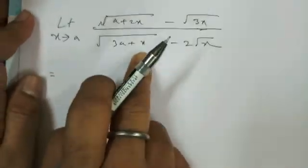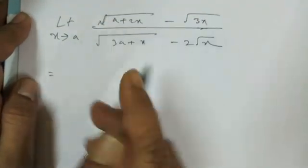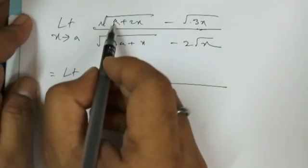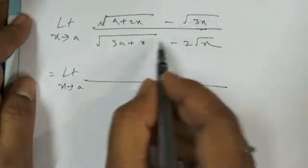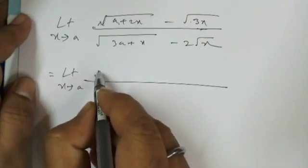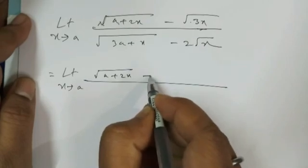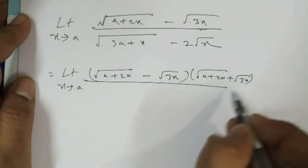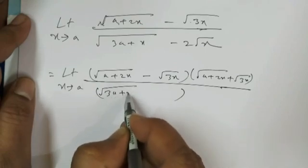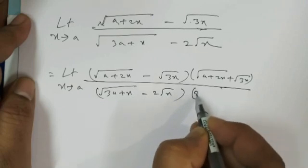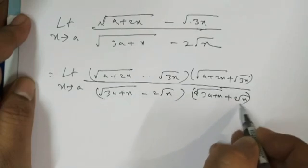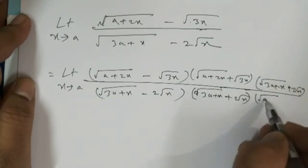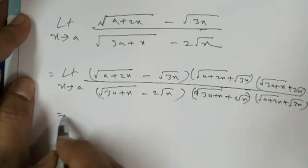This will be solved using double rationalization — rationalizing the numerator and denominator. Multiply by (a + b) because we have (a - b) form, using the formula a² - b². So multiply (a + 2x - √(3x)) by (√(a + 2x) + √(3x)) in numerator and denominator, and similarly (√(3a + x) - 2√x) by (√(3a + x) + 2√x).